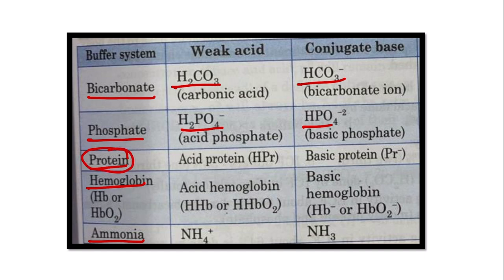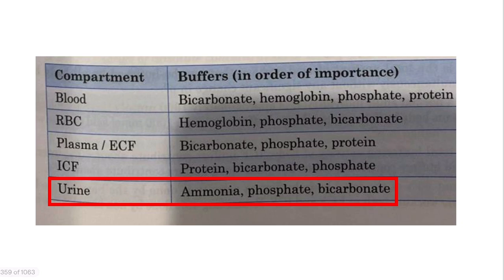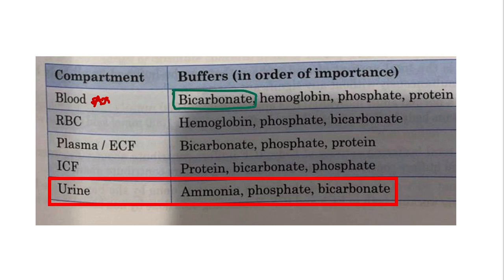The hemoglobin buffer is another important buffer which maintains the RBC lifespan and normal RBC activity. The ammonia buffer, phosphate buffer, and bicarbonate buffer are simultaneously present in the blood, ECF, ICF, and also in the urine. In the blood, the bicarbonate and phosphate buffers are important. These two buffers are present in almost all areas, so we must remember their names.